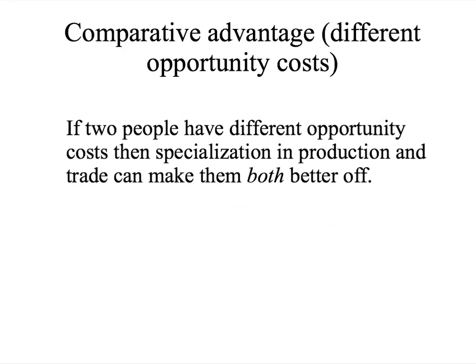First, a reminder: comparative advantage refers to the situation where individuals have different opportunity costs for different activities. When individuals have different opportunity costs, then specialisation according to the lower opportunity cost in production, and then trade, can make them both better off.